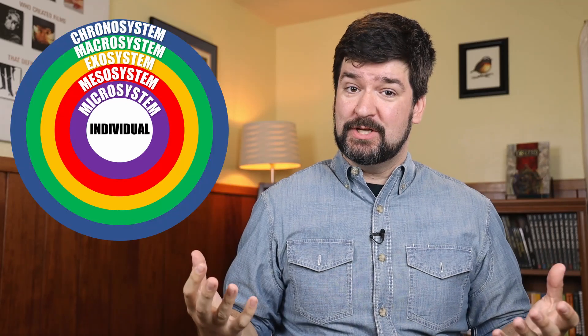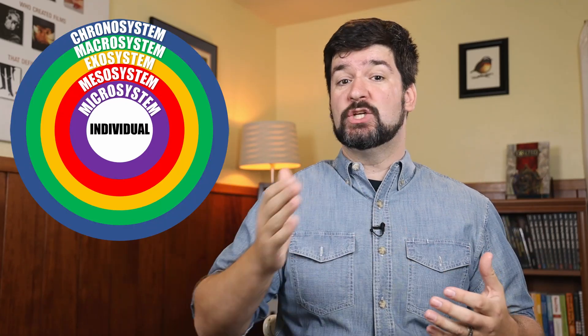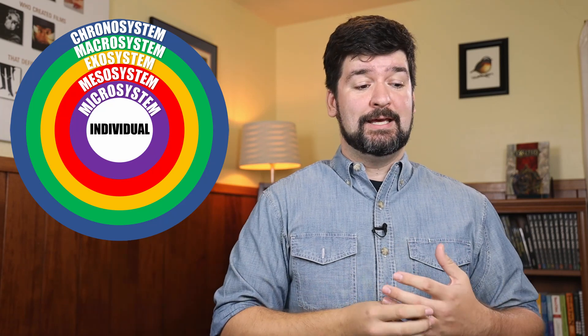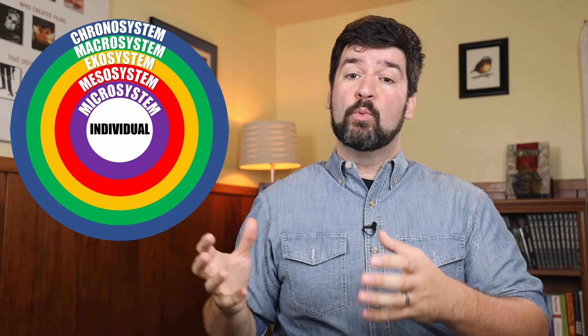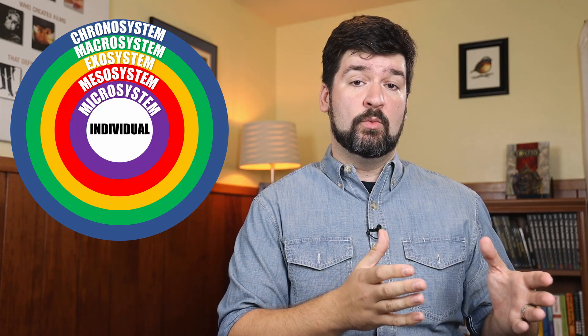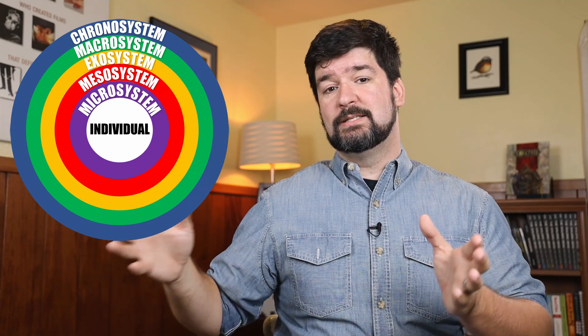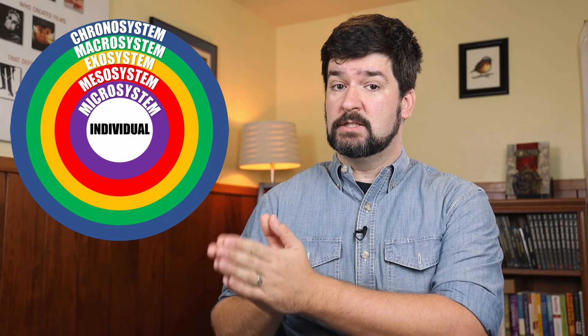There's one more level past the macrosystem: the chronosystem. The chronosystem is how all of these different systems change over time. They might be living in a war zone now, but they weren't always. Their parents may not have been living in one either. As the war progresses, how does that change their upbringing, change the values around them, change how they feel they need to act — as a child in a war zone versus living in a peaceful environment as an adult?